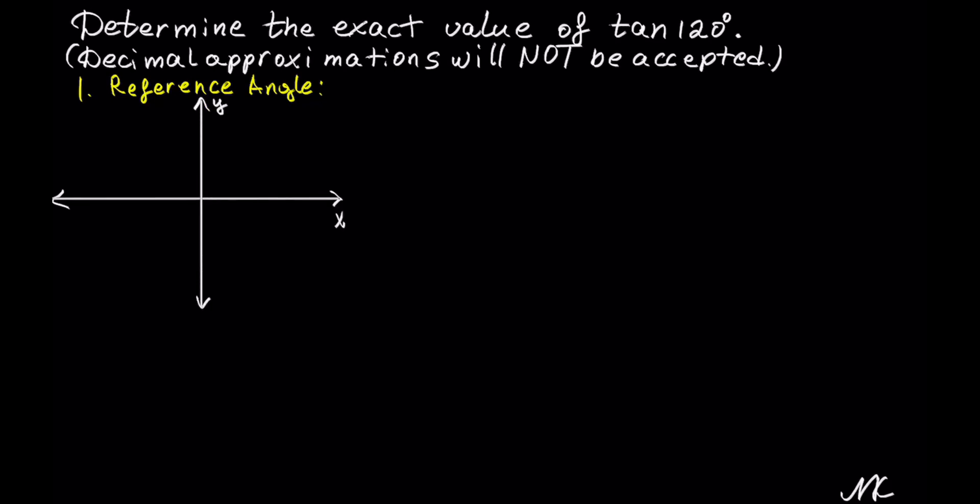I'm going to label the quadrantal angles. We have 0 degrees on the positive x axis, 90 degrees on the positive y axis, 180 degrees on the negative x axis, and 270 degrees on the negative y axis, and the circle completes at 360 degrees on positive x axis.